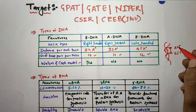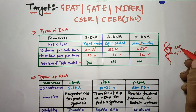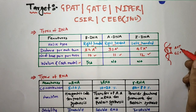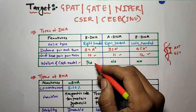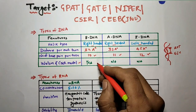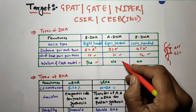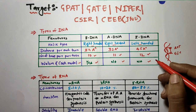The base pairs are A-T and G-C. The two bonds indicate weak hydrogen bonding between adenine and thymine, while guanine and cytosine have three bonds. Now regarding the Watson and Crick model: it is followed by B-DNA, and it is not followed by A-DNA and Z-DNA.